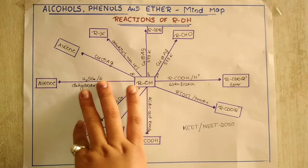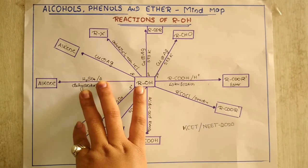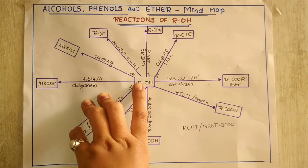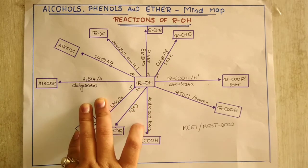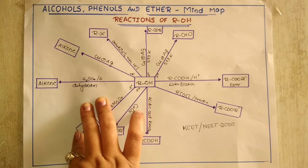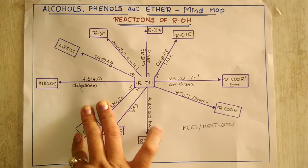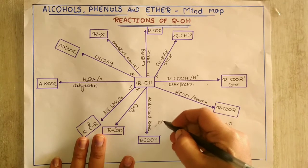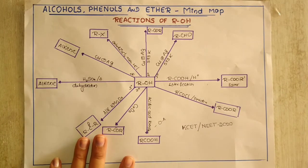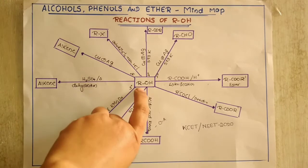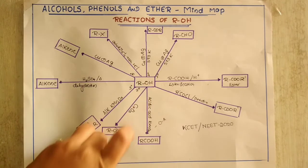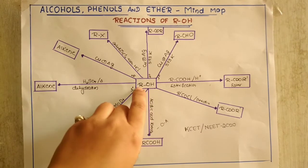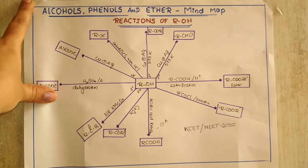Similarly, when alcohol is treated with acidic potassium permanganate, we know the role of KMnO₄ — it acts as a strong oxidizing agent. It directly oxidizes the alcohol into a carboxylic acid. So this you have to remember.